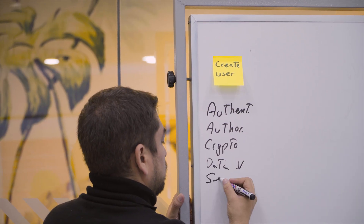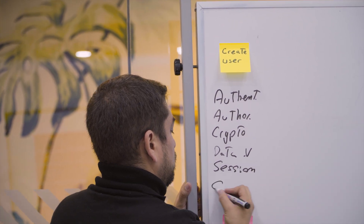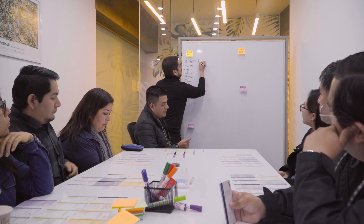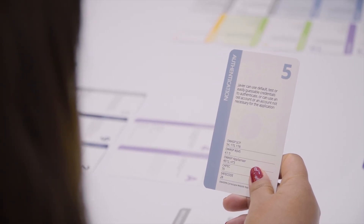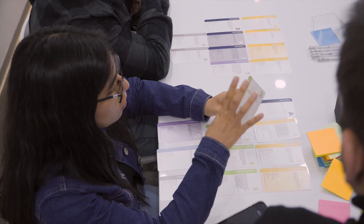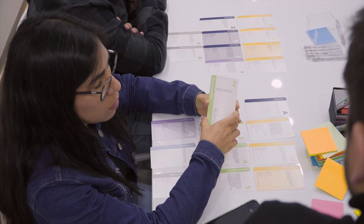We put the epics on post-its so we could associate the cards that apply to each of them. Each player explains their cards and tries to convince the other players which epics or user stories they relate to and why. The interesting thing about this dynamic is that we all come to understand what can go wrong and what situations we wouldn't want to expose ourselves to.